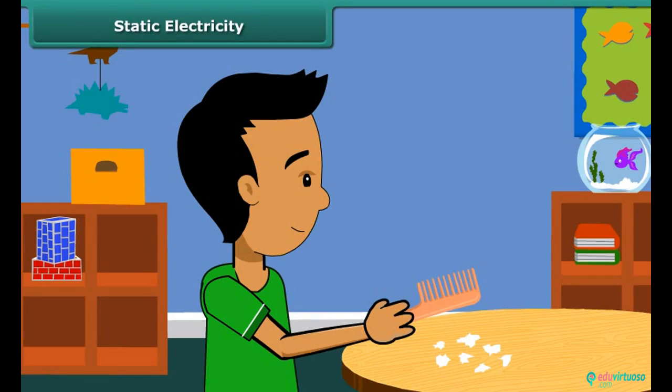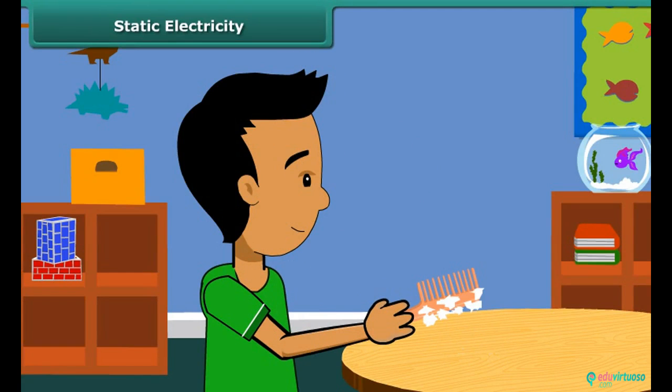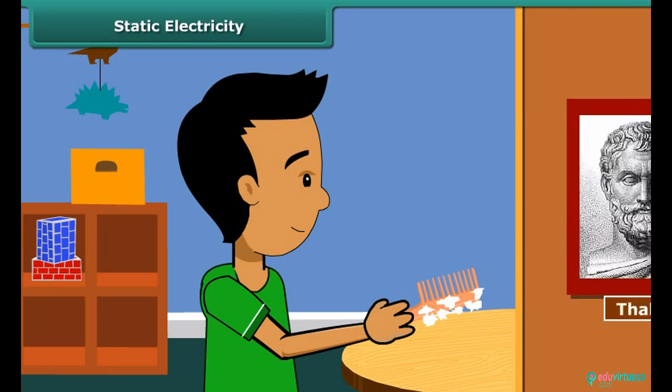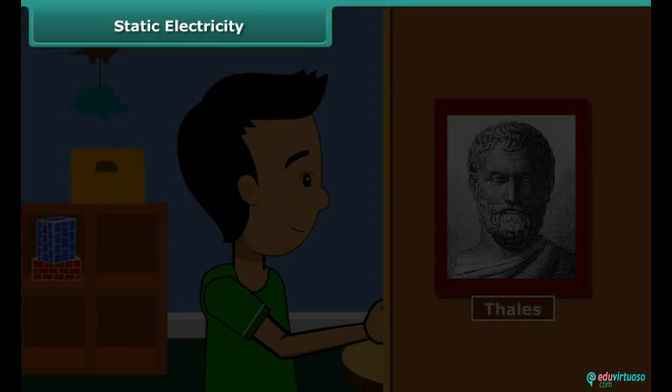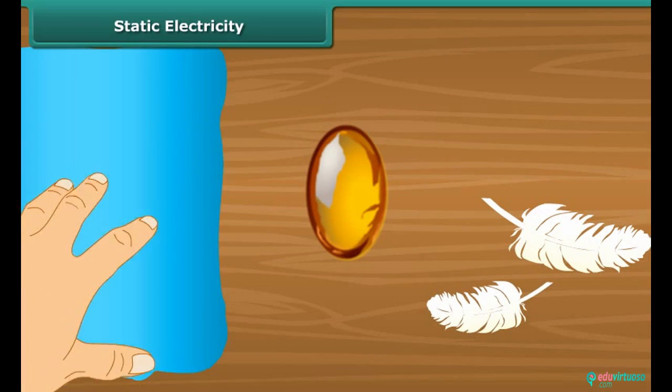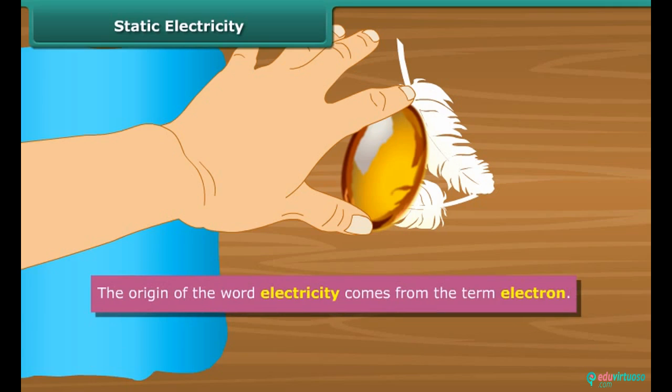When we comb our hair with a plastic comb and take it near small pieces of paper, the paper pieces are attracted toward the comb. We then say that the comb is charged with electricity. This was first noticed by a Greek man named Thales over 2500 years ago. Thales found that amber attracted tiny feathers after it was rubbed with silk cloth. This was due to static electricity. The origin of the word electricity comes from the term electron.